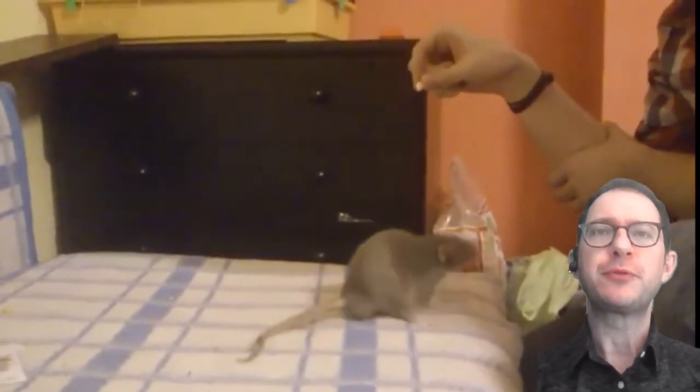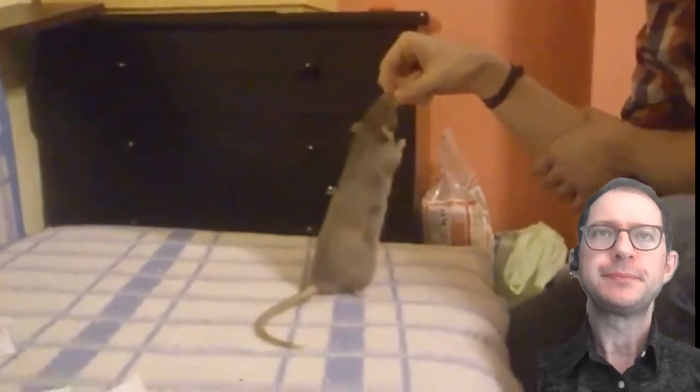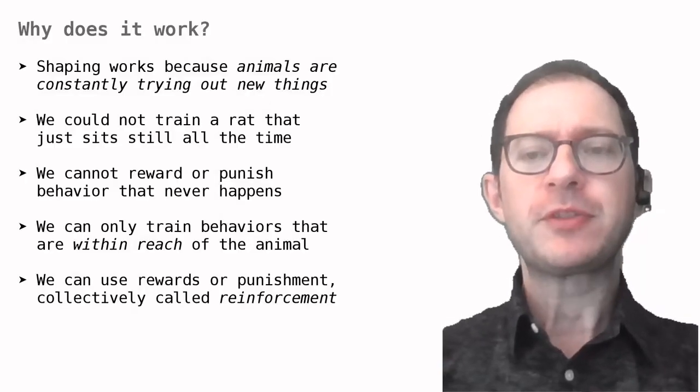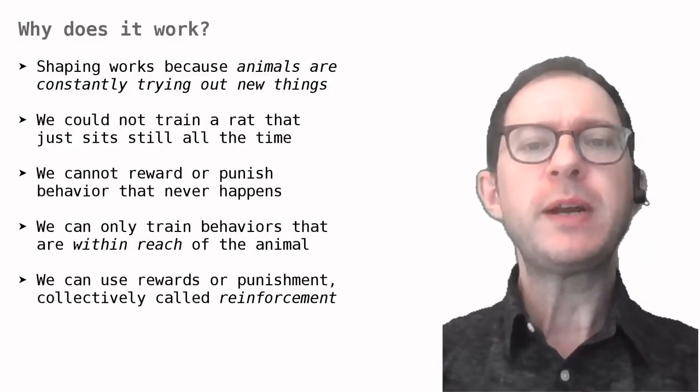For example, this rat has been trained to turn around for food. In the examples we watched, training used a reward, but one can also use punishment.